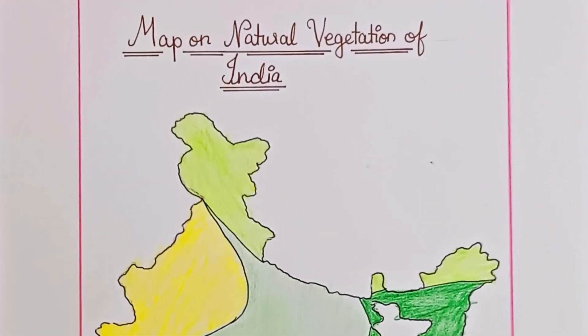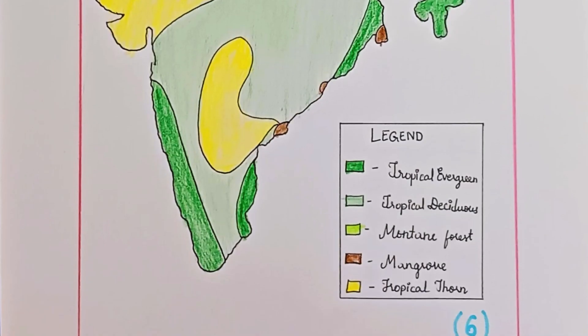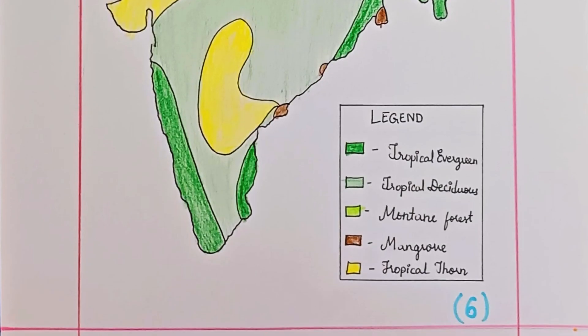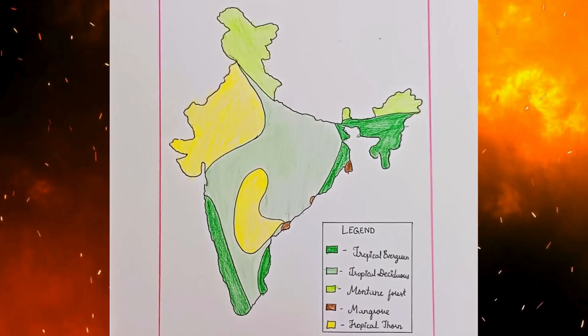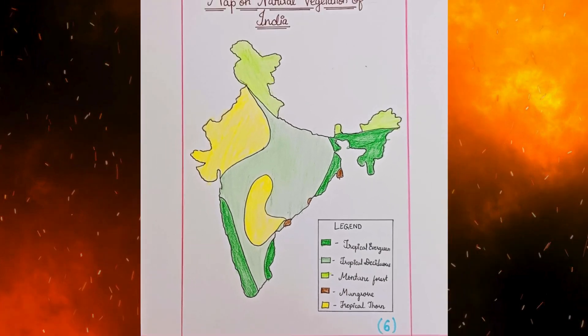Map on Natural Vegetation of India. Legend: Tropical Evergreen, Tropical Deciduous, Montane Forest, Mangrove, and Tropical Thorn.